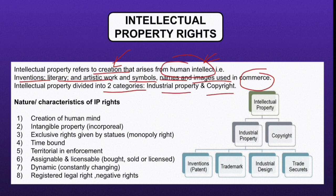Look at this diagram. Intellectual property is divided into industrial property and copyright. Industrial property is further divided into four subcategories: inventions (in the form of patents), trademarks, industrial designs, and trade secrets.